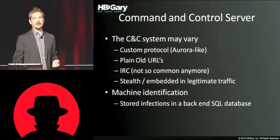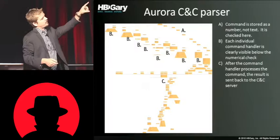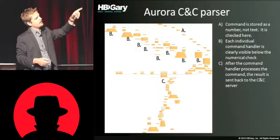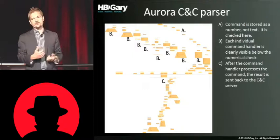Here's the Aurora command and control parser. At point A, the command comes in as a numeric command — it's not written out as text. And at each location marked in B are all the different code, all the different subroutines essentially, that will run based upon the number that's at A. So essentially you have right here all the capabilities of the remote access tool essentially defined for you. Once those things have executed, they regroup at C and send the result back up to the server. This is a great fingerprint.